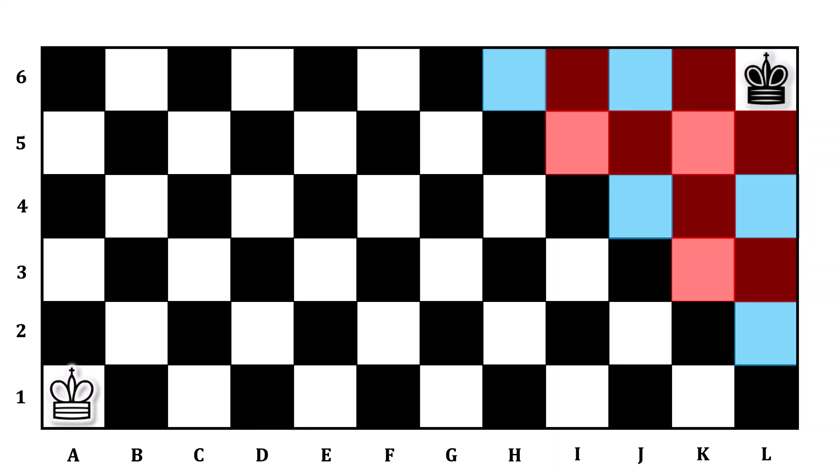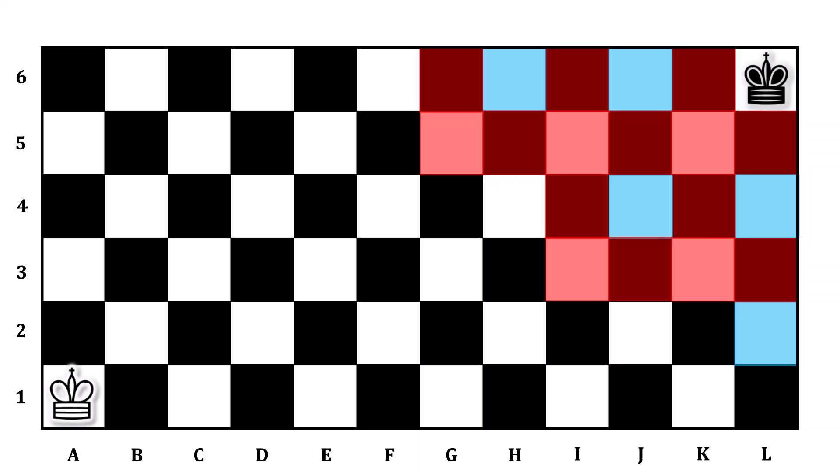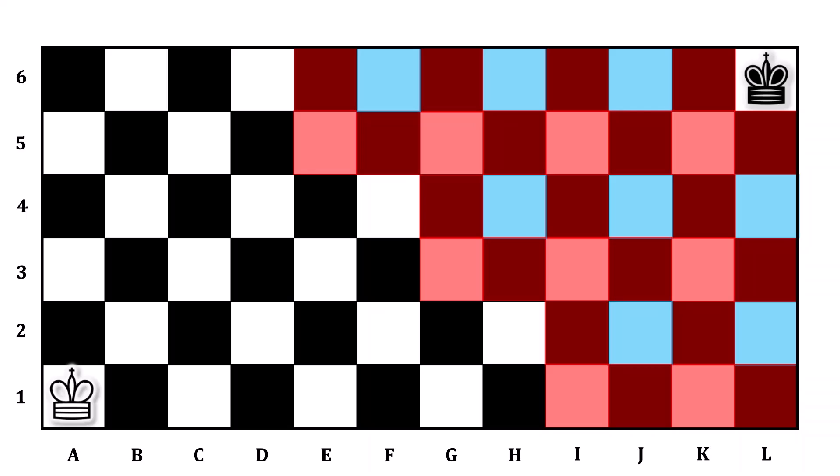From here, we can mark more losing squares, and you may start to see the pattern. Because H6 is a winning square, these three squares are losing squares. If you finish your turn anywhere there, your opponent would be able to move into H6 afterward, causing you to lose. Because J4 is a winning square, these three squares are losing squares. And because L2 is a winning square, these three squares are losing squares. That information allows us to unlock three new winning squares: F6, H4, and J2. Those then allow us to mark out all of the red squares that surround them. And now the pattern should be clear.